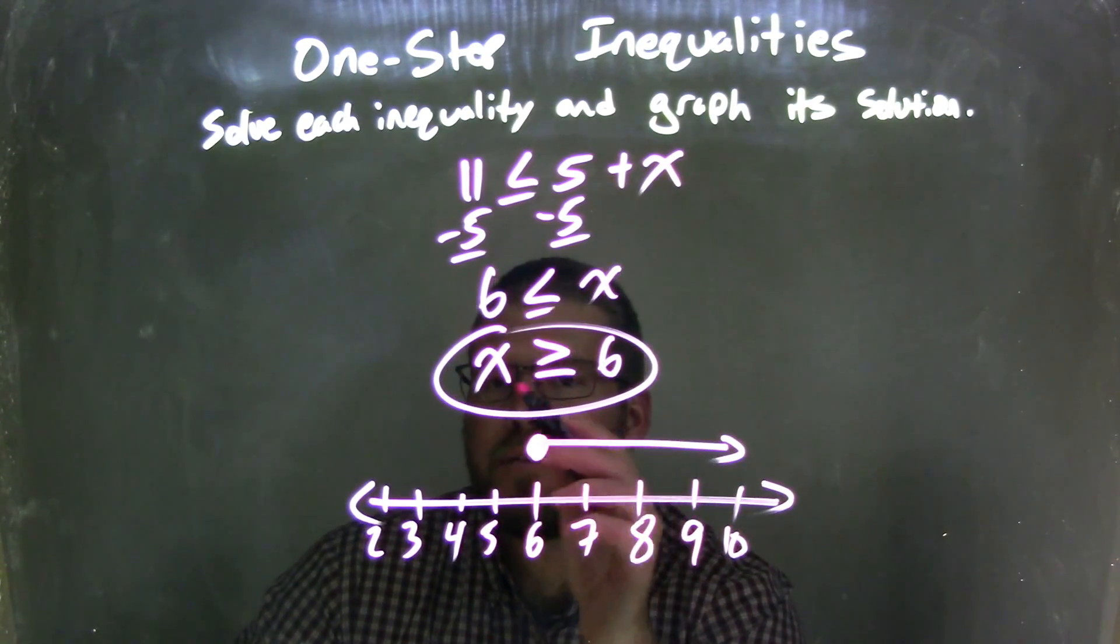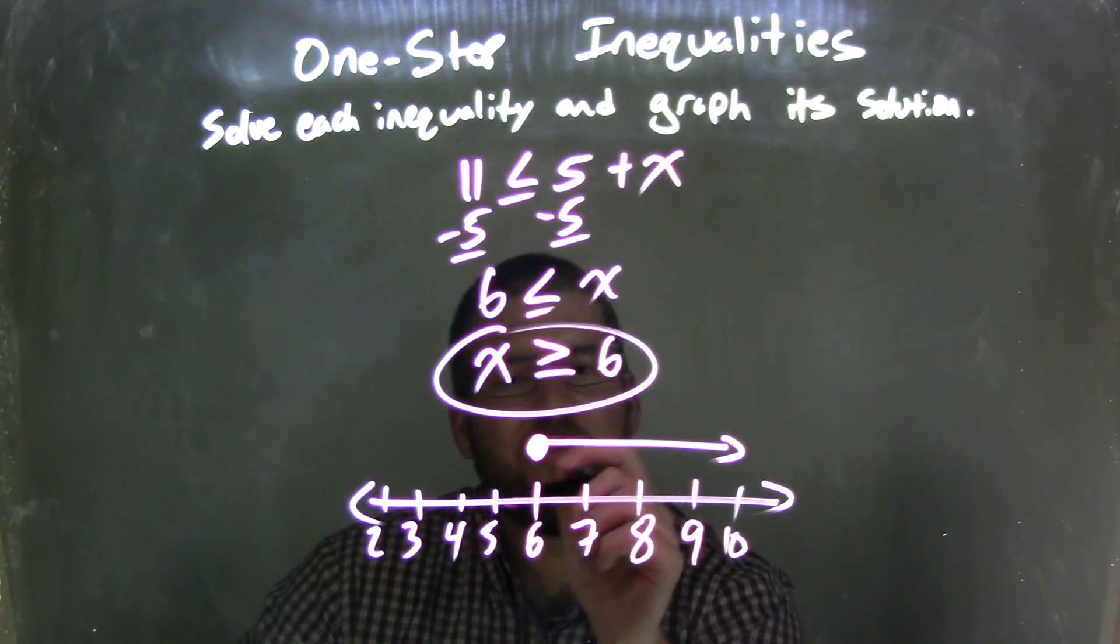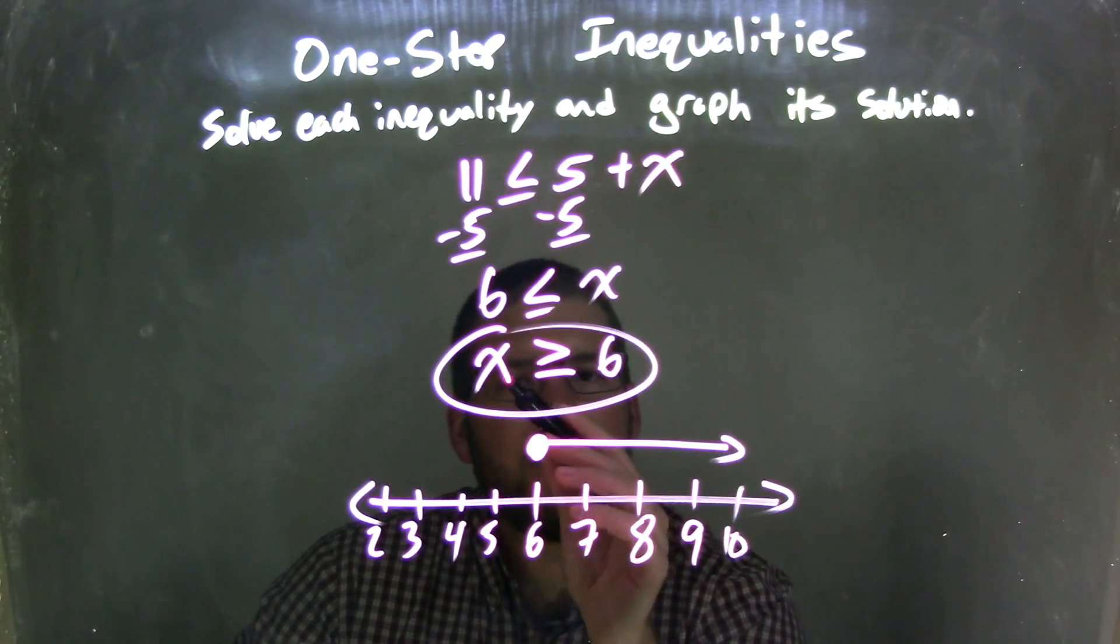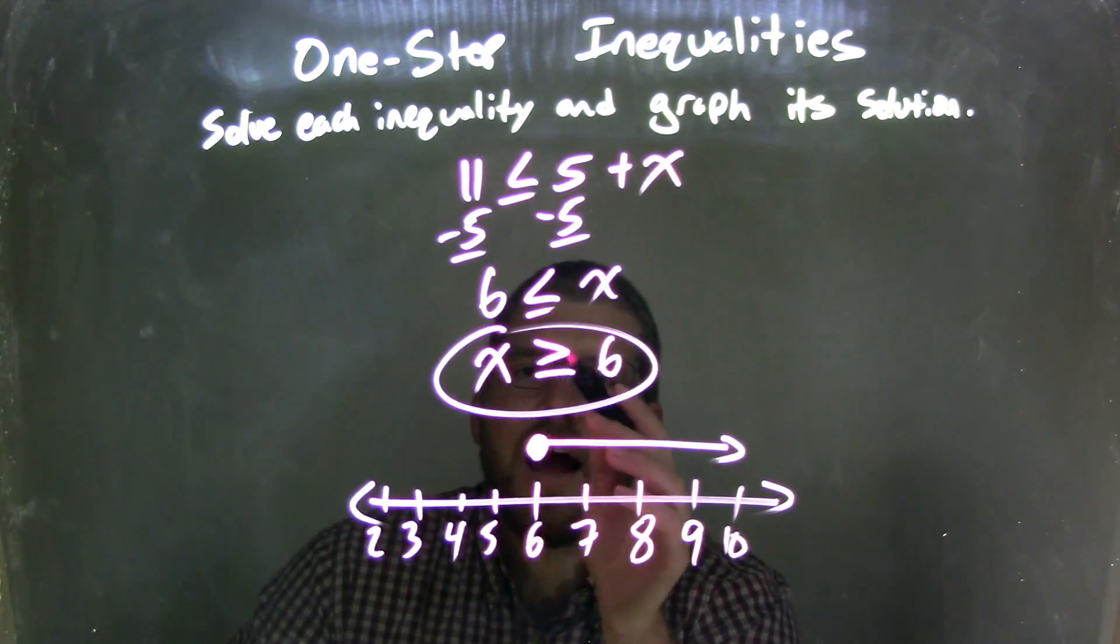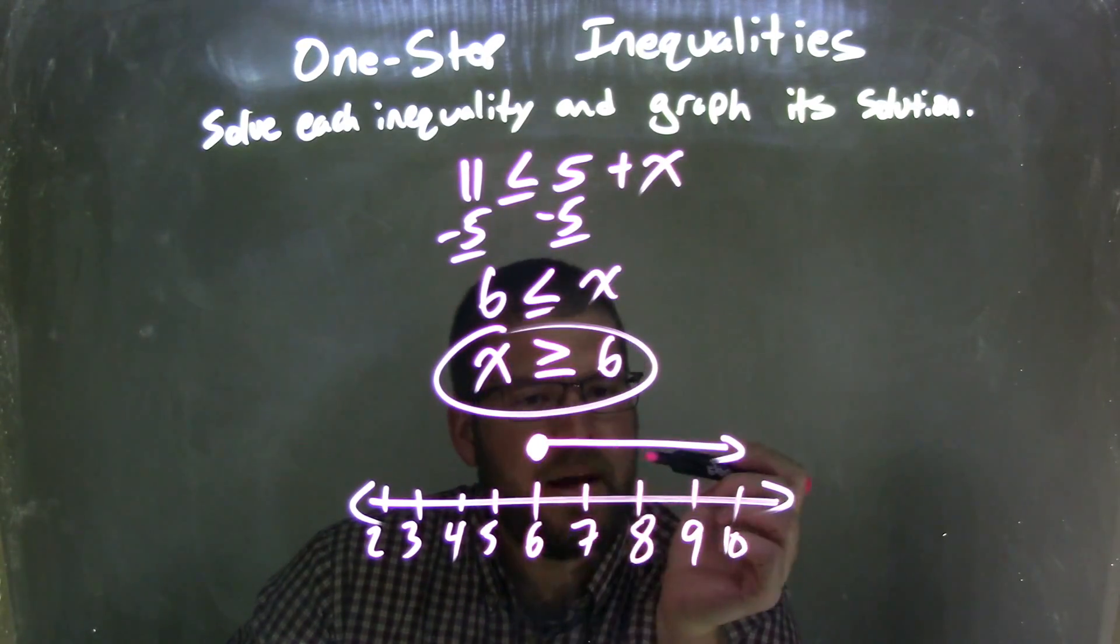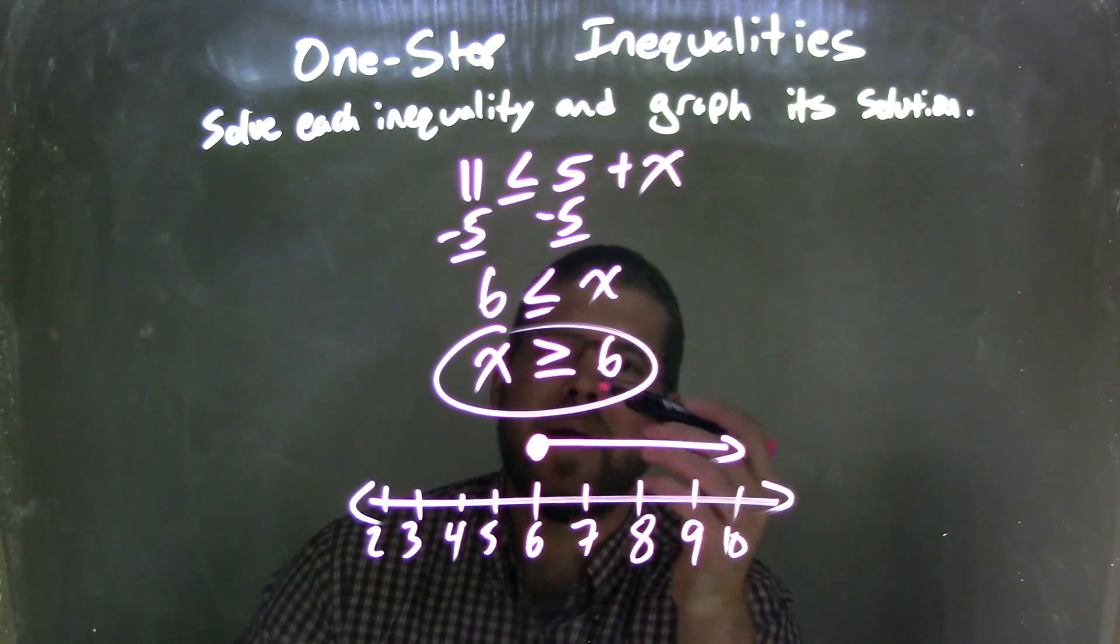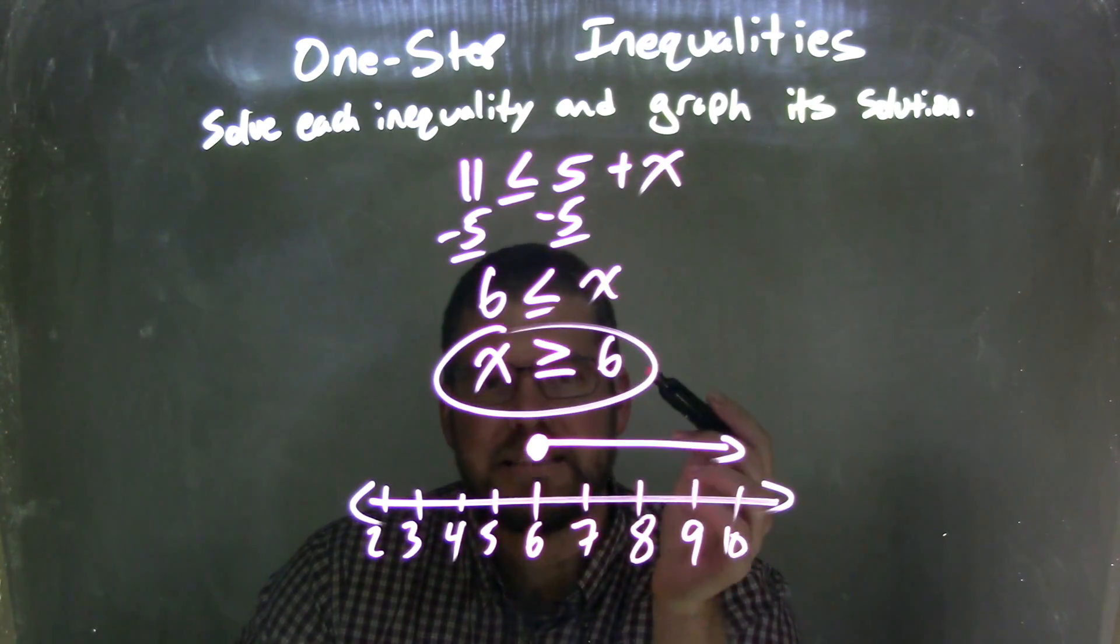So does 6, right? 6 is greater than or equal to 6. But 5 does not, right? 5... not greater than or equal to 6. That's not true. And it doesn't match with my graph. So my graph does match my inequality, which is x is greater than or equal to 6.